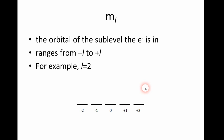M sub L, which is also called the magnetic quantum number, is the orbital of the sublevel that the electron is in. It can be anything from negative L to positive L, inclusive. So for example, if L equals two, then the M sub L values can be negative two, negative one, zero, positive one, and positive two.